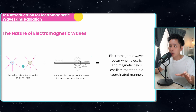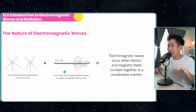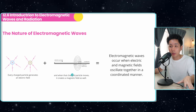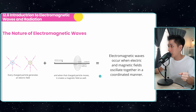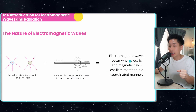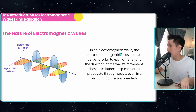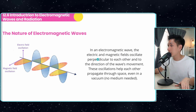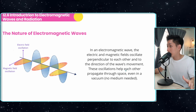Every charged particle — positive or negative — has an electric field. When these charged particles move, they also create a magnetic field. So we have a combination of electric and magnetic fields, and when this happens we get an electromagnetic wave. In an electromagnetic wave, the electric and magnetic fields oscillate perpendicular to each other, and this oscillation allows them to propagate through space.